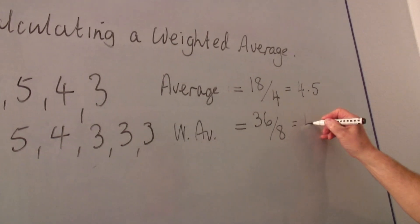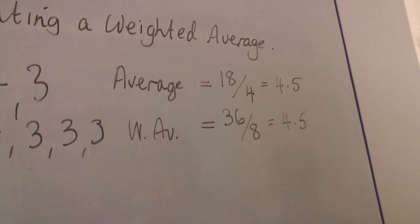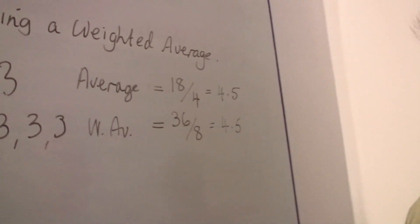So four-eighths are thirty-two. The weighted average in this case turns out to be also four point five.